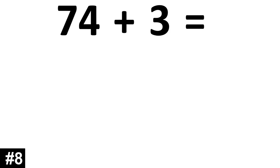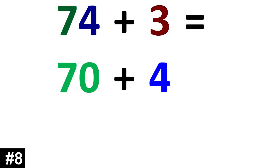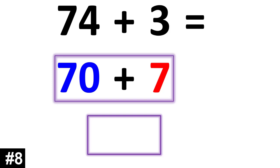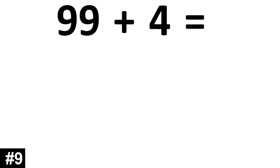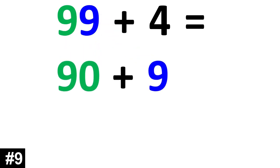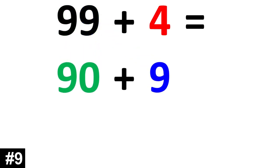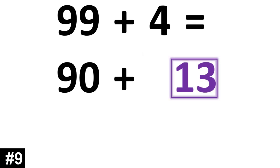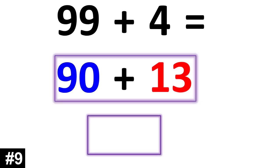74 plus 3. 74 is the same thing as 70 plus 4. So if we add a 3 to that, 4 plus 3 is going to give us 7. 70 plus 7 is 77. Next, 99 plus 4. 99 is the same thing as 90 plus 9. If we add a 4, 9 plus 4 is equal to 13. 90 plus 13 is 103.